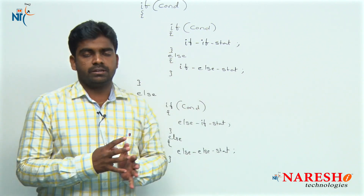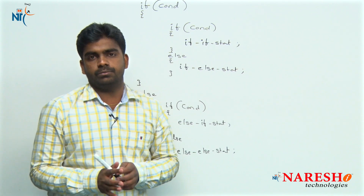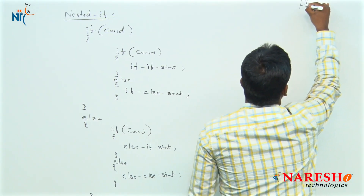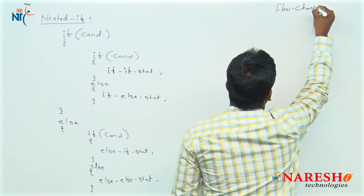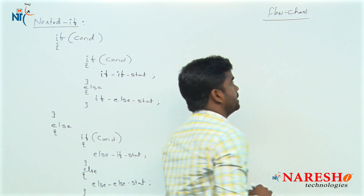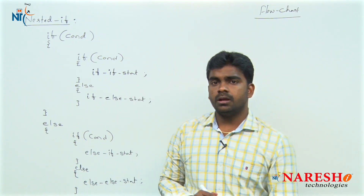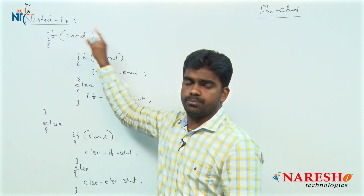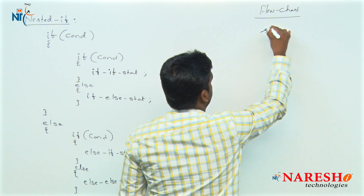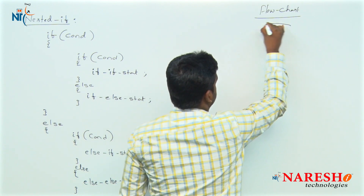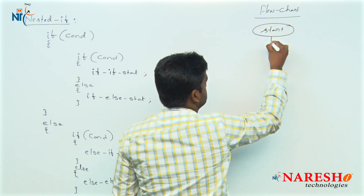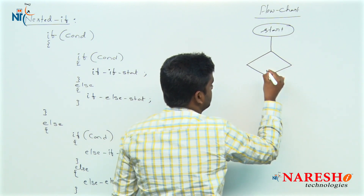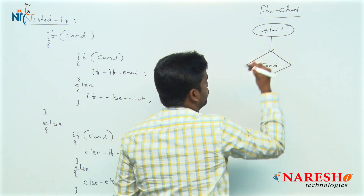Now, for this syntax, let's see how the flowchart will look. All flowchart rules we need to follow while writing a flowchart for nested if. First, we start, and as the first step we check the outer condition. For every condition, two options are there — true and false.